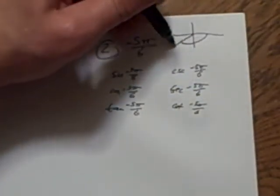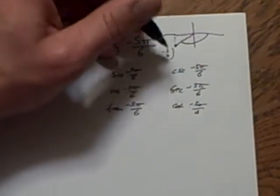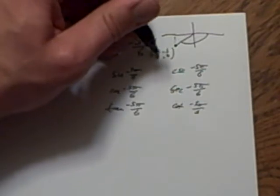So let's see, negative 5 pi over 6 is about here. I know that the y part is negative 1 half, and the x part is negative root 3 over 2.